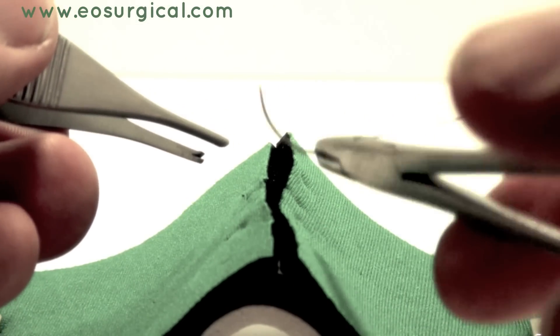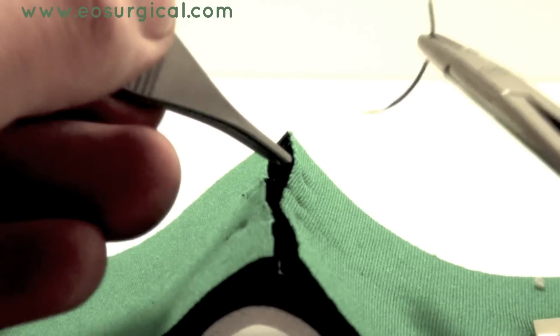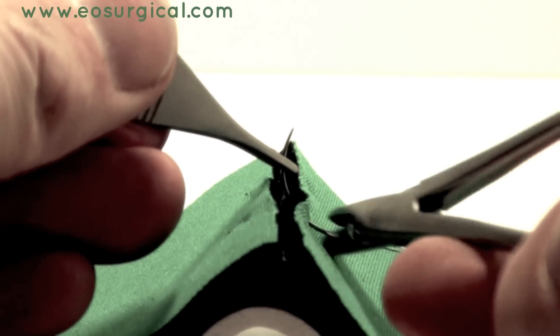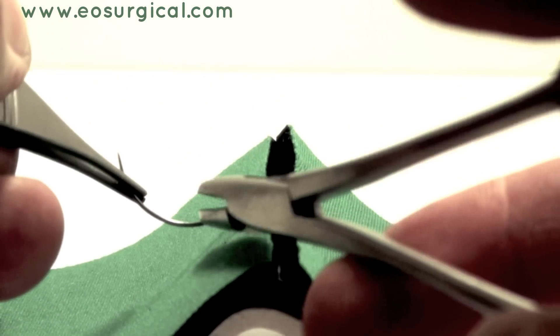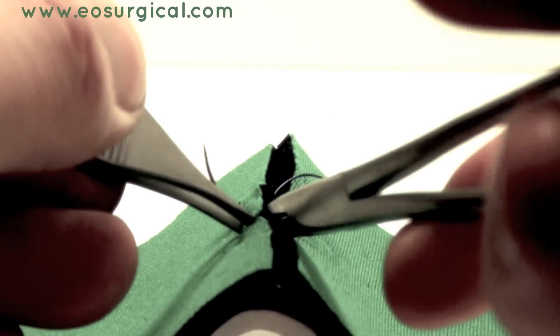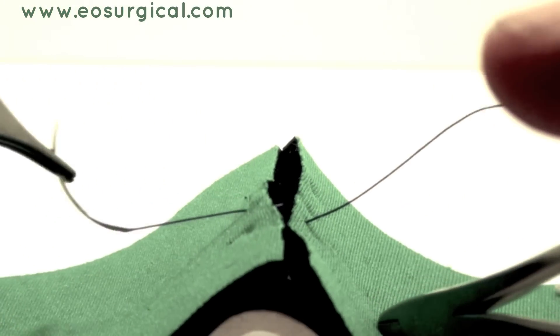Now, first of all, it's important that you pass the suture through the tissues and follow the curvature of the needle. This causes a minimum amount of tissue damage. Note how the wrist rotates through to allow this curvature to be followed.